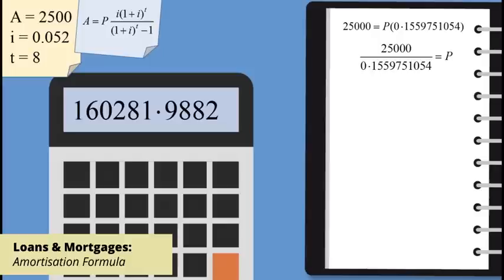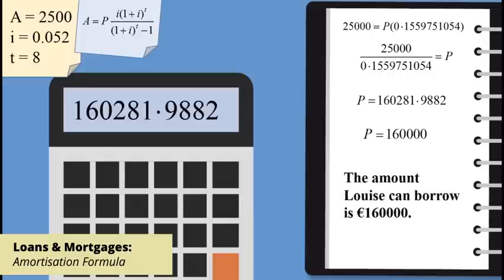To three significant figures, this is 160,000. Finish by stating that the amount Louise can borrow, correct to three significant figures, is 160,000 euro.